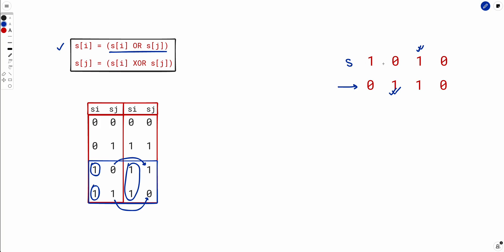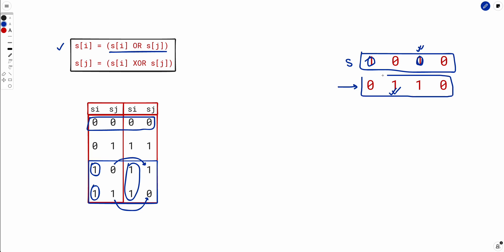Now if there is no 1 in s — everything is 0 — any operation you perform will yield 0, so the string remains all 0. If everything in s is 0, the final string can only be all 0. So if s is all 0, then t must also be all 0 for them to be equal; otherwise you cannot make them equal.